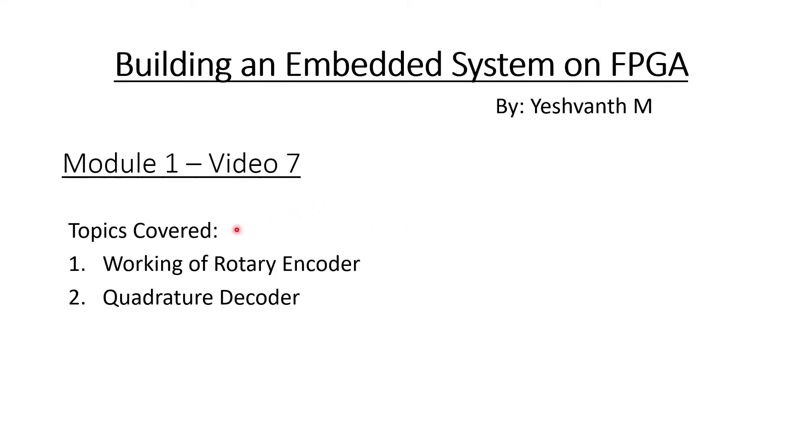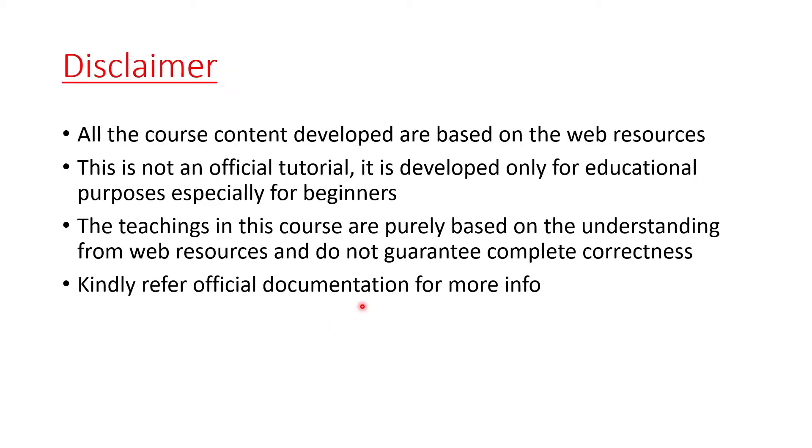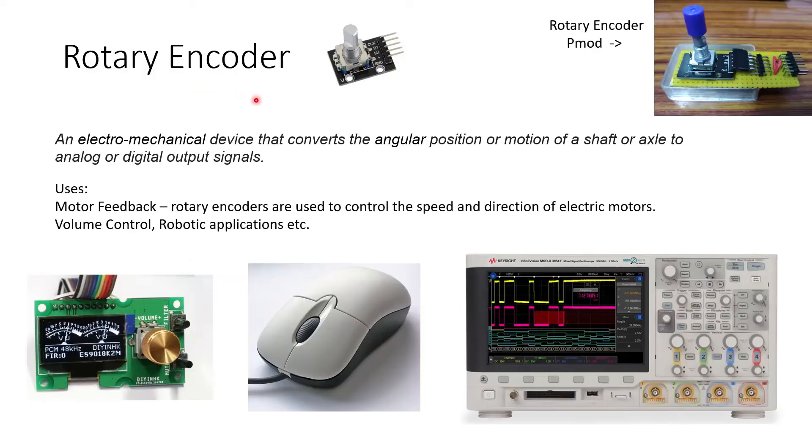In this video, we learn about the working of rotary encoder and the quadrature decoder. So let's start. This is the regular disclaimer. Always refer to the official documentation. Then, rotary encoder. Rotary encoder is a device that converts angle or position or a motion of a shaft or axle into analog or digital output signals.